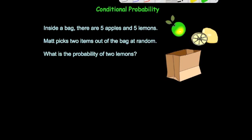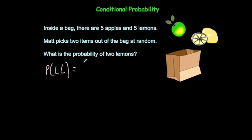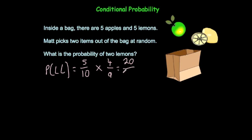Let's have a look at this question. We've been asked to find the probability of two lemons — the probability of a lemon and a lemon. The probability of the first item being a lemon would be five out of ten. Now the next one being a lemon: if we've taken a lemon out of the bag, that leaves nine items, five apples and only four lemons. So the probability of the next one being a lemon is four out of nine. Multiplying those together: 5×4=20 and 10×9=90, which cancels down to two ninths. So the probability of a lemon and a lemon is two ninths.